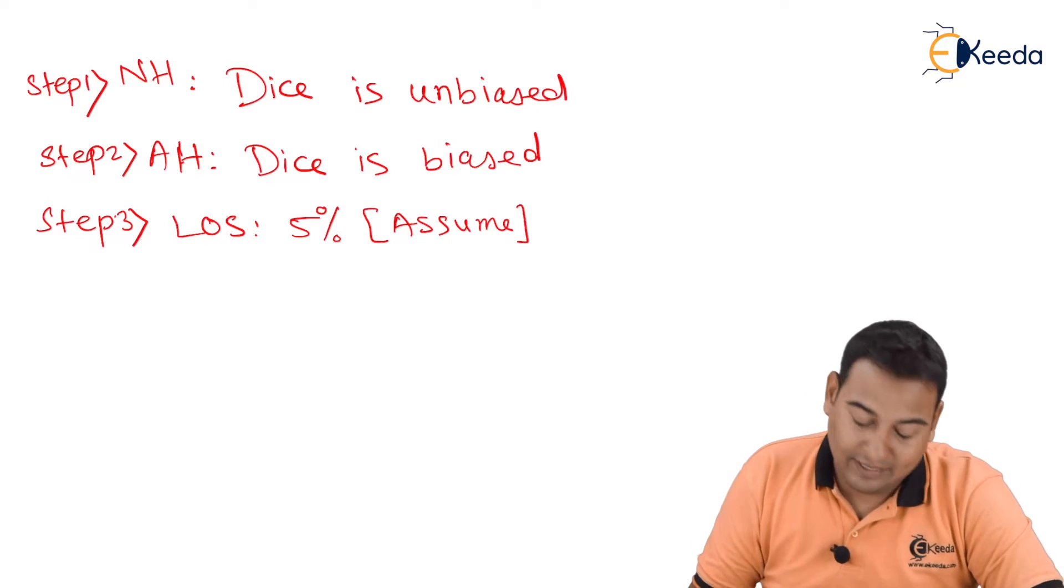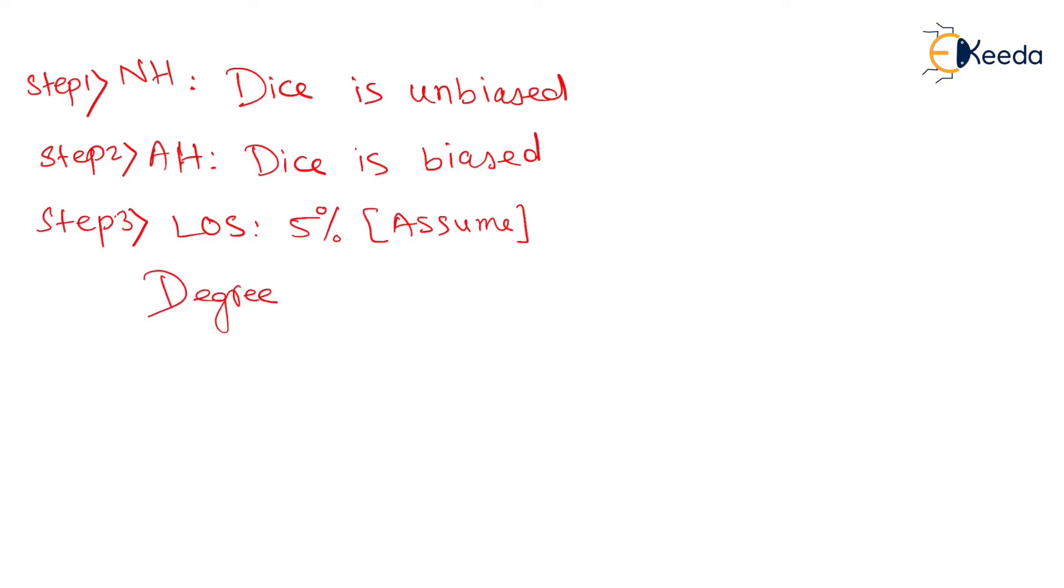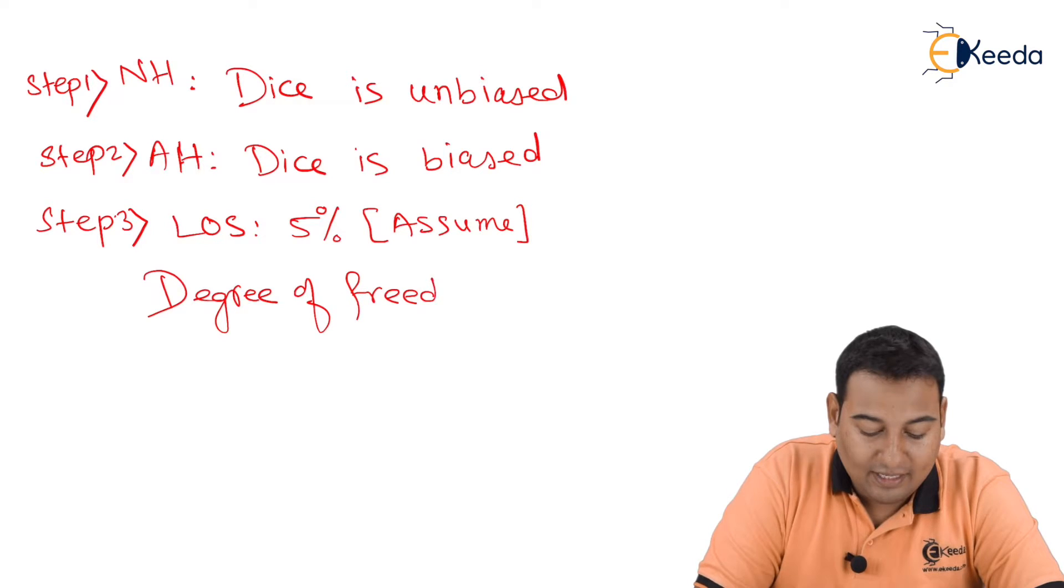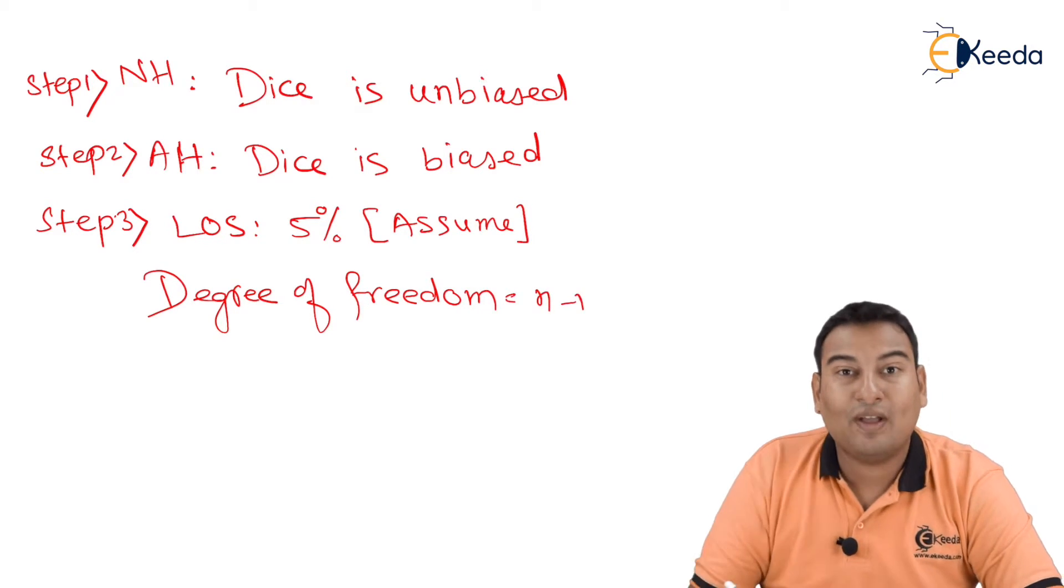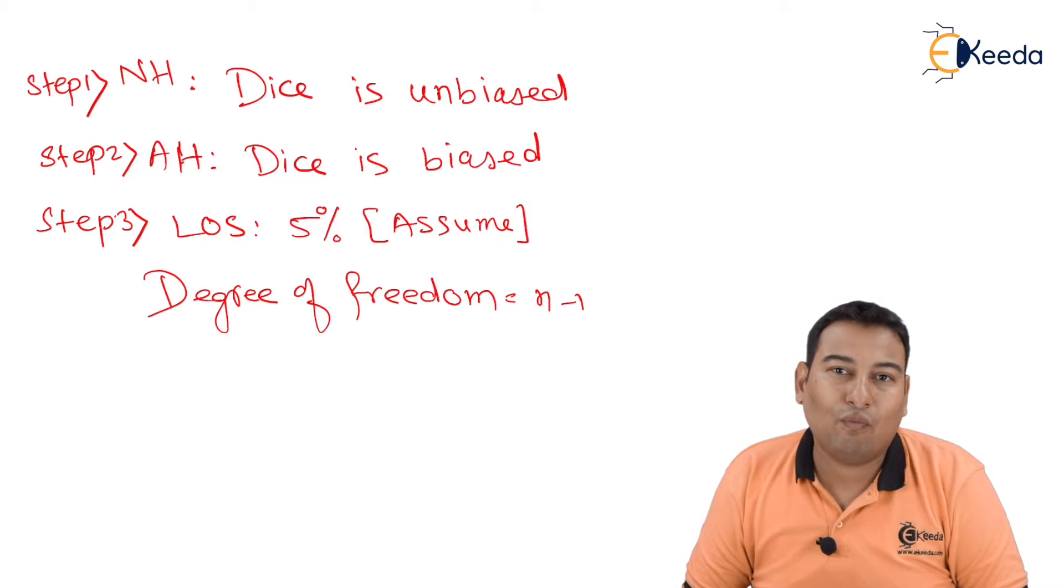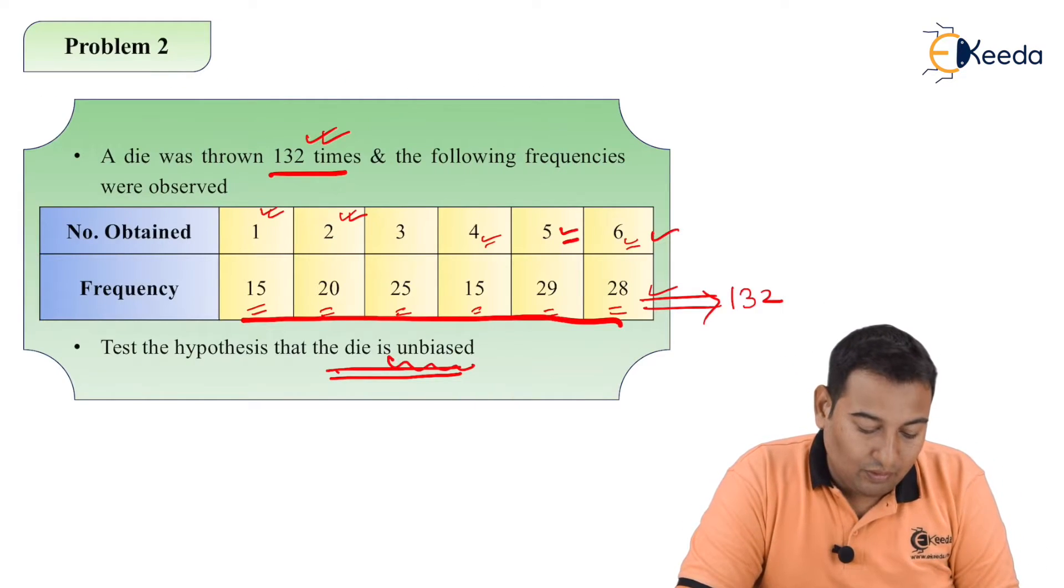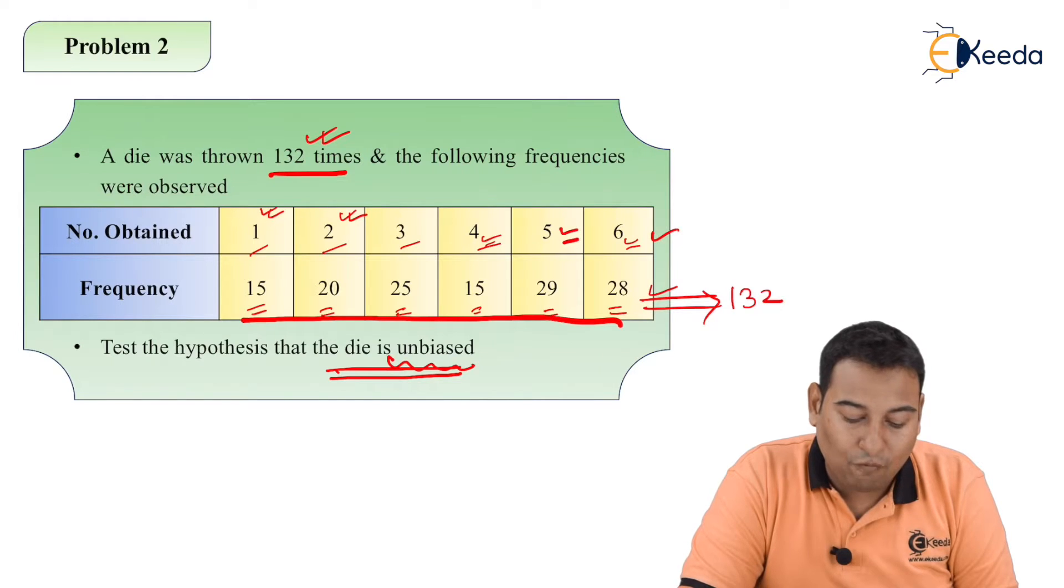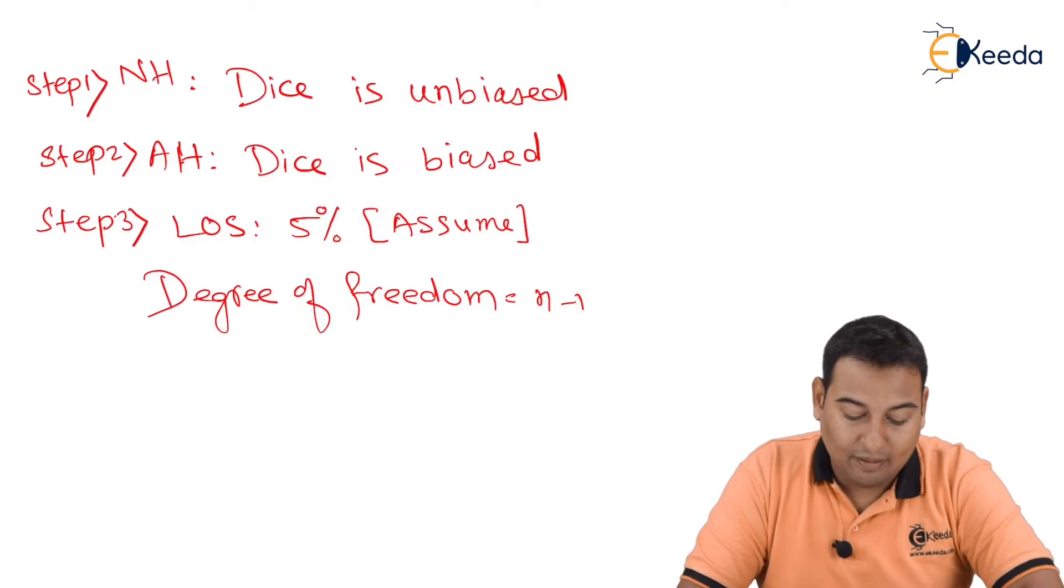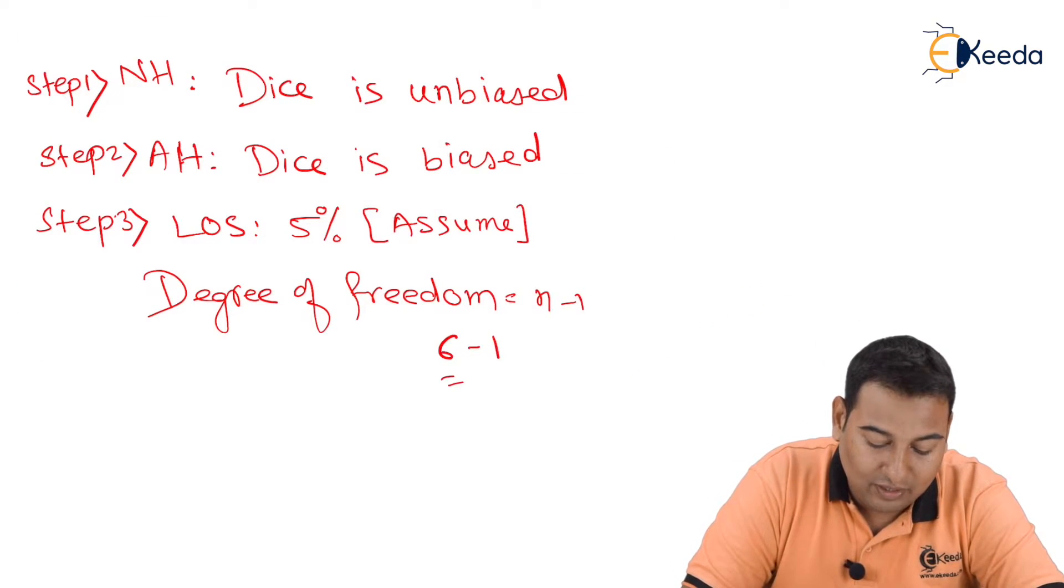What next? Degree of freedom. Degree of freedom as discussed, the formula is n minus 1, where n indicates number of values. Here 1, 2, 3, 4, 5, and 6 possibilities. Therefore n is 6, so 6 minus 1 is equal to 5.